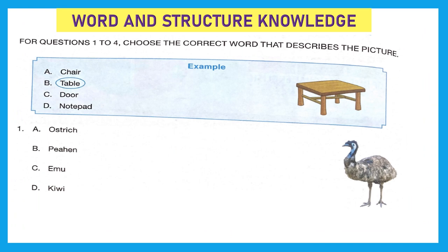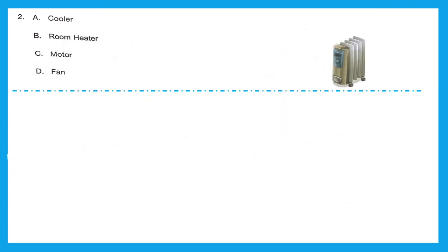First section is Word and Structure Knowledge. For questions 1 to 4, choose the correct word that describes the picture. For question 1, can you see and guess which bird this is? It is emu. The right answer is option C. Question 2, it's a room heater. Option B is the right answer.